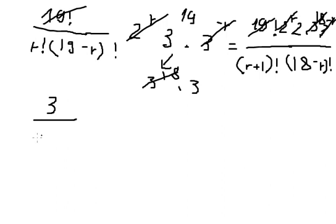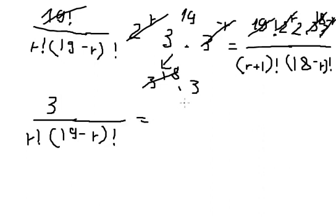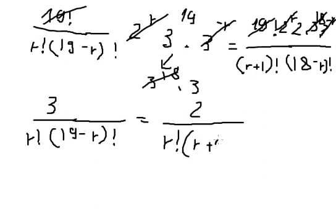After cancellation, we have 3 over r factorial times 19 minus r factorial on the left. On the right, r plus 1 factorial can be written as r factorial times r plus 1.